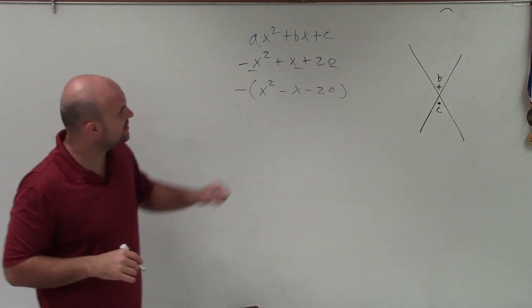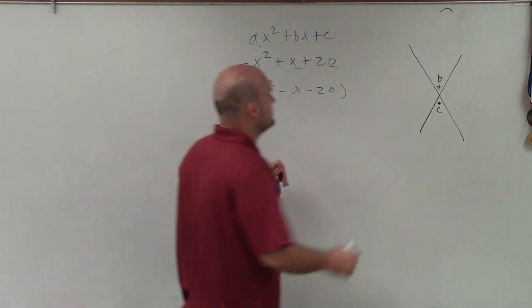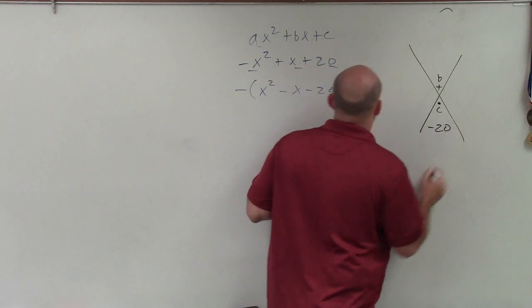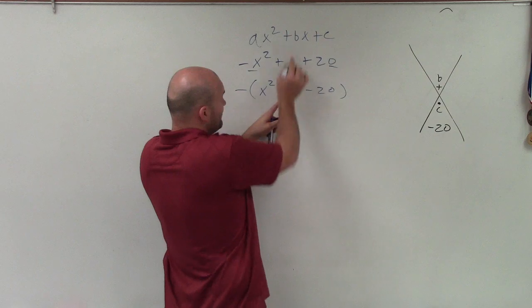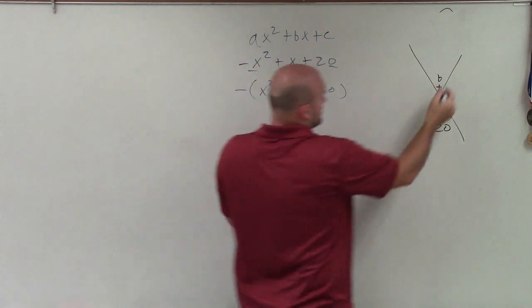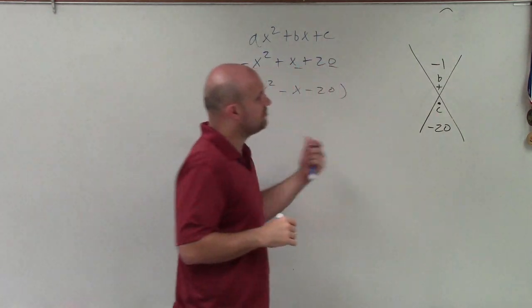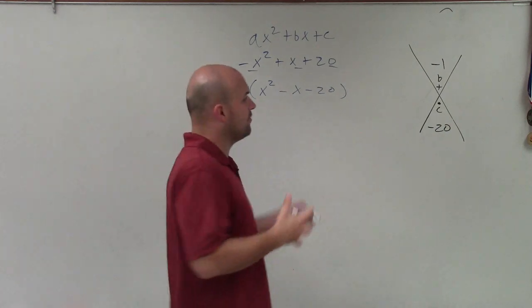So what we're going to do is simply take our value for c, which is going to be negative 20, and then we're going to take our b, which will be negative 1. I'm getting a, b, and c from here. And say, all right, what two numbers multiply to give me negative 20, but then add to give me negative 1?